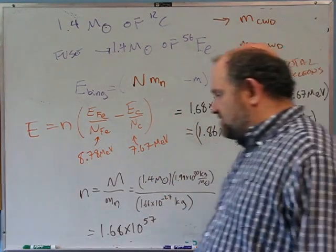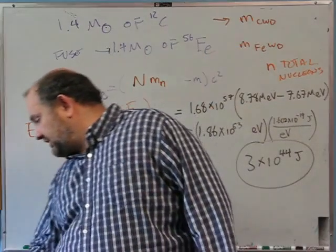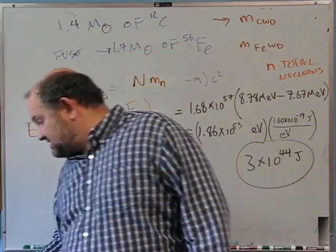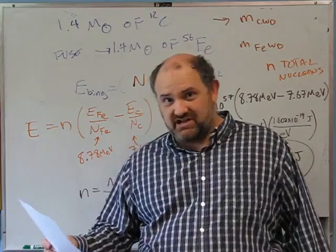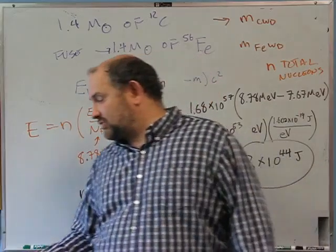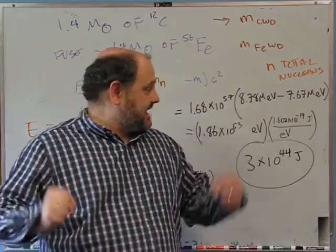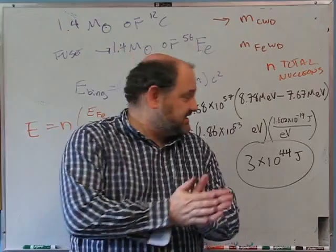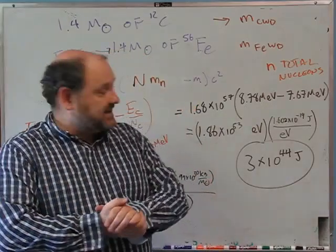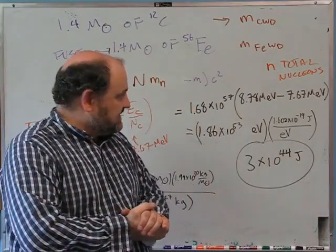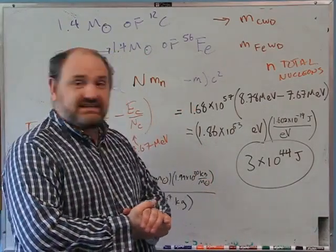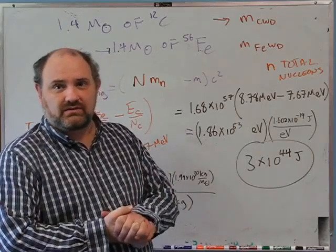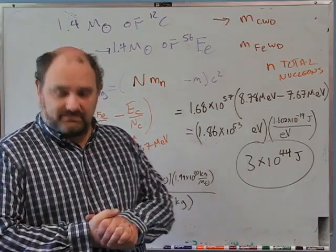That's 3×10⁴⁴ joules. Observationally, supernovae of this sort release about 10⁴⁴ joules — so our estimate matches. This is part of why we think we understand these supernovae: the basic energetics give the right energy output, which is why we believe these are white dwarves exploding.